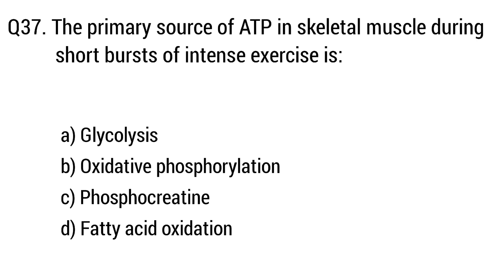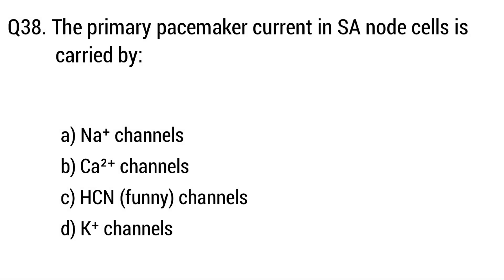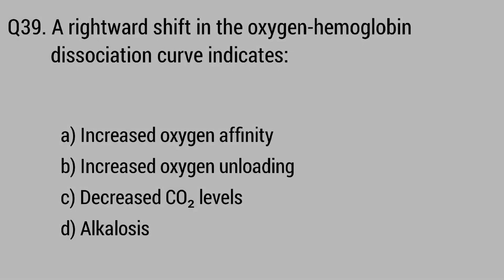Question 37. The primary source of ATP in skeletal muscle during short, high-intensity exercise — the right answer is Option C: Phosphocreatine. Question 38. The primary pacemaker current in SA node cells is carried by — the right answer is Option C: HCN funny channels.